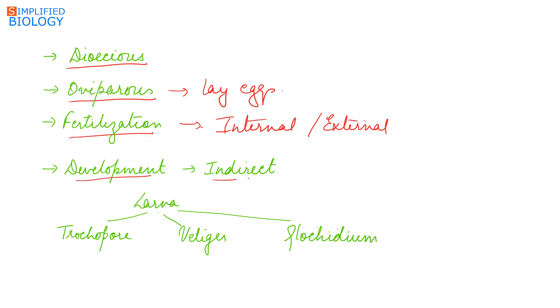Development is indirect, meaning they have the larval stage during development. The most common larva is the trochophore, but in some, veliger and glochidium is also seen. Glochidium is the parasitic stage of the larva.